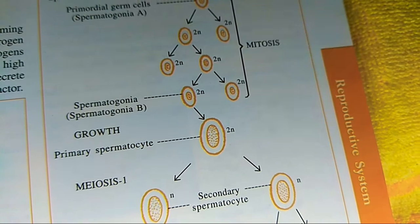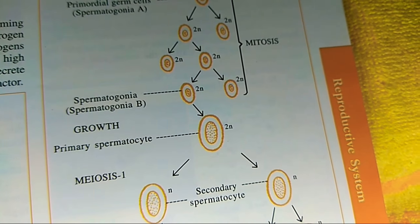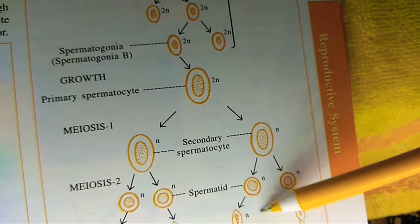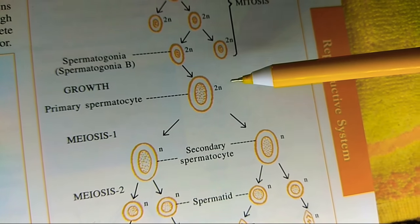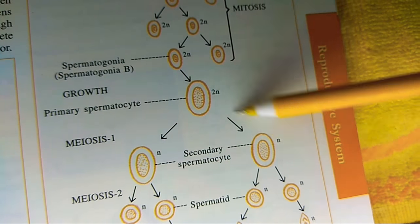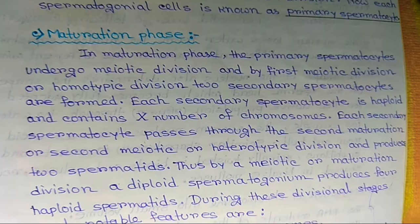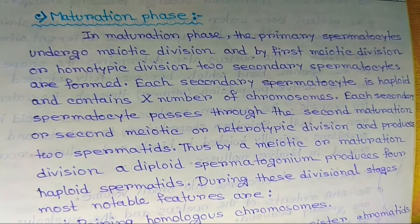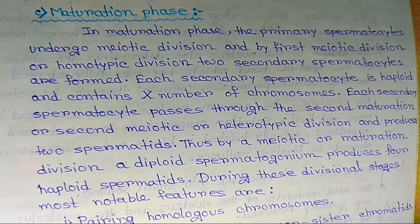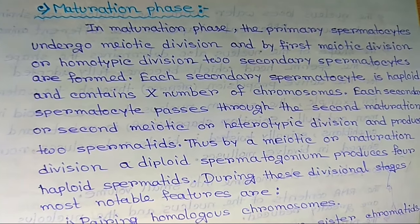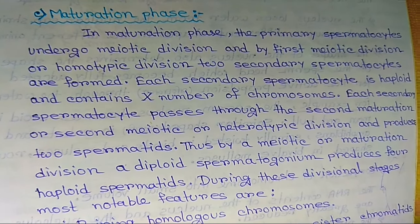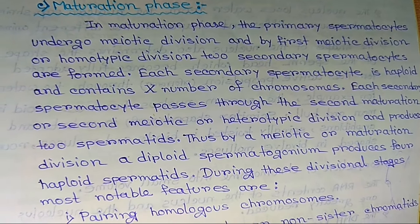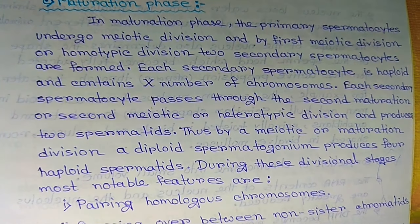In the maturation phase, the primary spermatocytes undergo meiotic division. By the first meiotic division, also called homotypic division, two secondary spermatocytes are formed. Each secondary spermatocyte is haploid and contains N number of chromosomes. Each secondary spermatocyte then passes through the second maturation or heterotypic division and produces two spermatids.